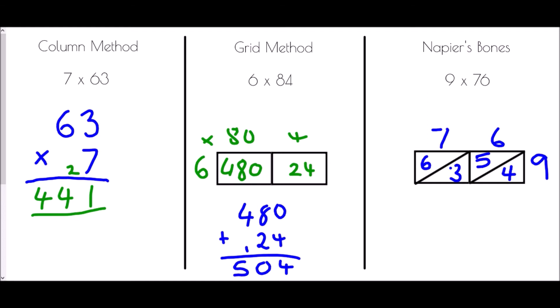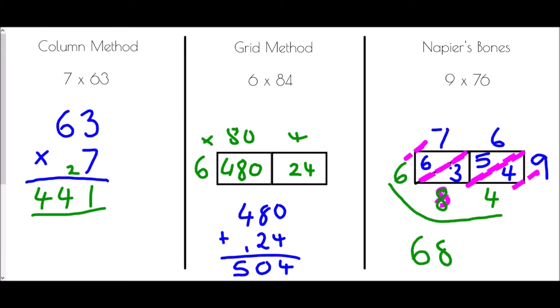Now we read off our answers using diagonals. The first diagonal has the number 4 in it. The second diagonal has 3 and 5 in it — add those together: 5 plus 3 is 8. The last diagonal just has the 6, so no adding needed. Reading along the bottom, 9 times 76 is 684.